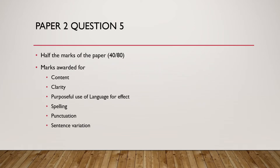So first of all, what does Question 5 on Paper 2 involve? Like Paper 1, Question 5 on Paper 2 is also worth half of the marks of the paper. The marks are awarded similarly to Paper 1 by your content, your clarity, your purposeful use of language for effect, your spelling, your punctuation and your sentence variation.